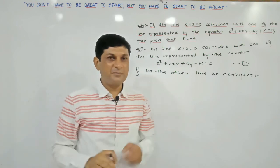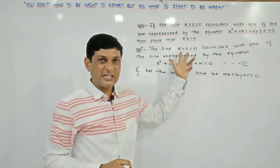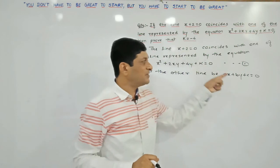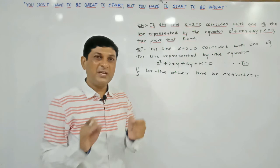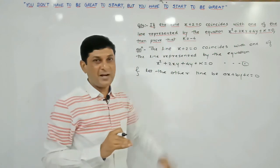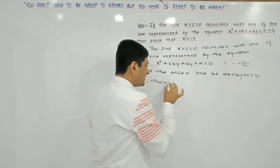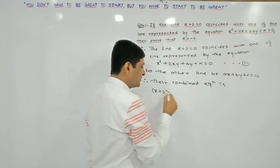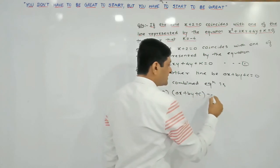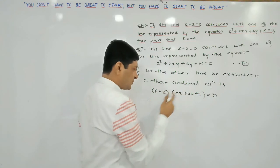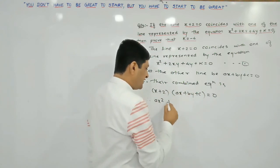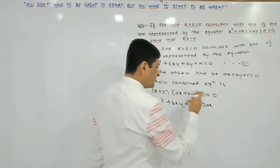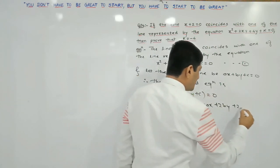Since it is a general equation of second degree in x and y, it represents two lines. The first line is x plus 2 equals 0 and we suppose the second line is ax plus by plus c equals 0. Now we find the combined equation of these two lines. Multiplying: x into ax gives ax squared, x into by gives bxy, x into c gives cx, 2 into ax gives 2ax, 2 into by gives 2by, and 2 into c gives 2c, equals 0.